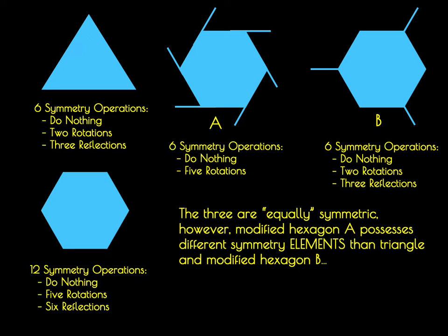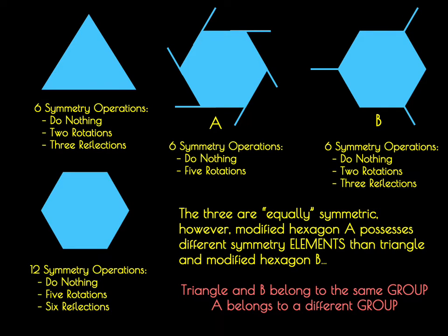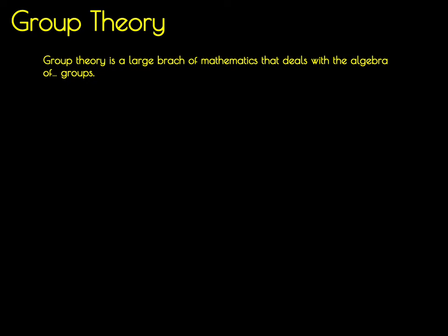We can say that the triangle and hexagons A and B are equally symmetric with one another. However, modified hexagon A possesses different symmetry elements than the triangle, while the triangle and hexagon B have identical symmetry elements. If we were to group together the symmetry elements of these objects, what we could say is that the triangle and hexagon B belong to the same group of symmetry elements, but A belongs to a different group of symmetry elements. So what we're now getting into is the mathematics of grouping together objects and operations.